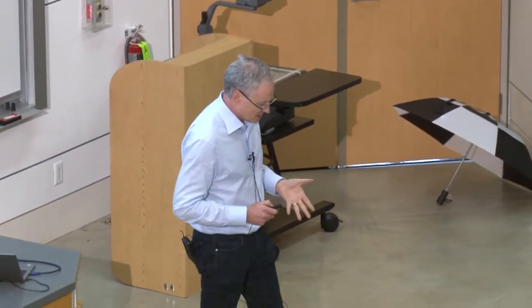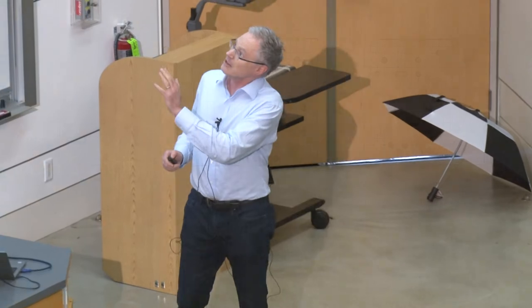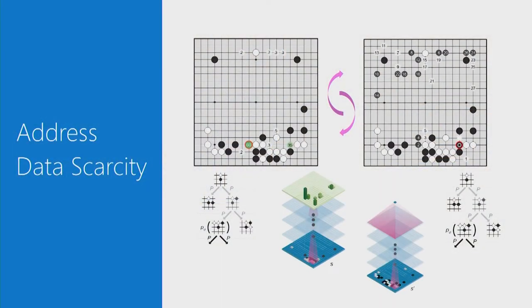Some interesting directions we're pursuing — one is to address data scarcity. Games of perfect information like Go or chess allow systems to play themselves a trillion times in a reinforcement learning setting. But in the real world, for things we really care about, we're mostly in an era of data scarcity when it comes to that kind of data.